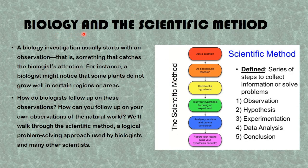Next we look at biology and the scientific method. A biology investigation usually starts with an observation — something that catches the biologist's attention. For instance, a biologist might notice that some plants do not grow well in a certain region. The scientific method is a logical problem-solving approach used by biologists and many other scientists. This picture here describes the scientific method and its steps — it is a series of steps to collect information or solve problems.